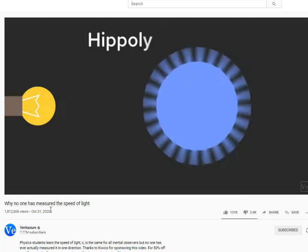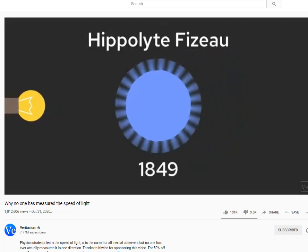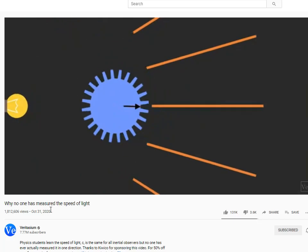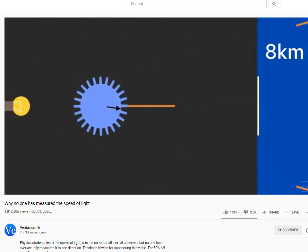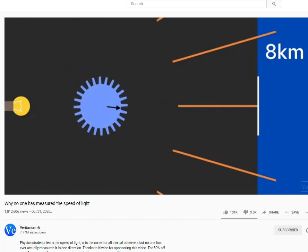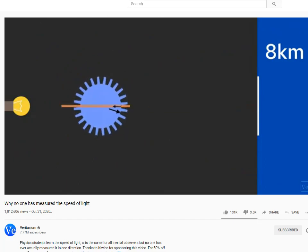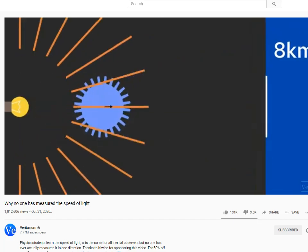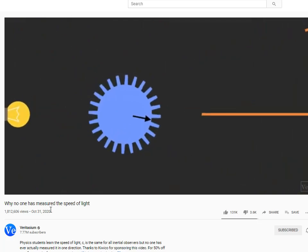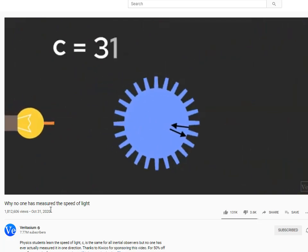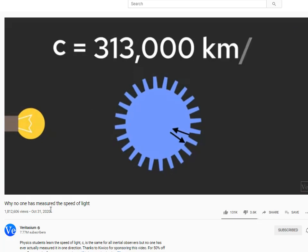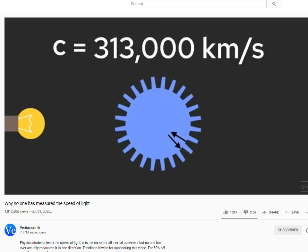Experimentally measured by Hippolyte Fizeau in 1849, he shone a beam of light between the teeth of a rapidly spinning gear to a mirror up on a hill 8 kilometers away, and then by increasing the speed of the gear, he reached a point where the reflected light passed through the next gap on the gear. So he measured the speed of light to be 313,000 kilometers per second, which is within 5% of the presently accepted value. So someone has measured the speed of light.